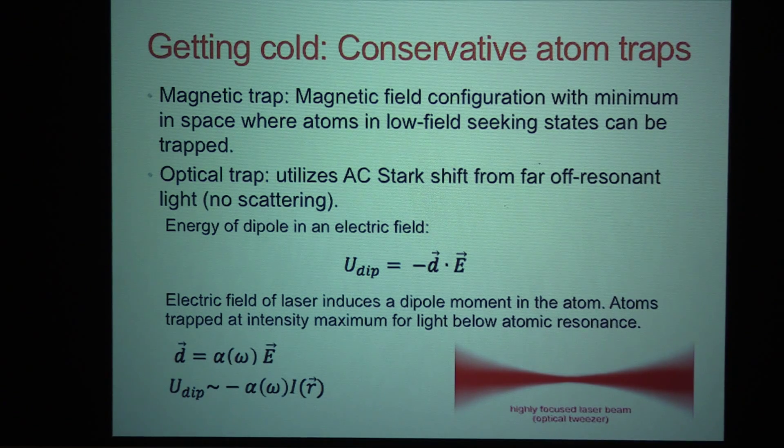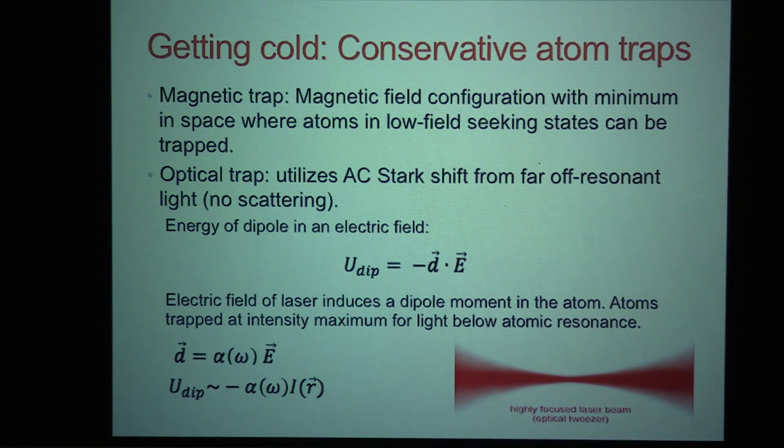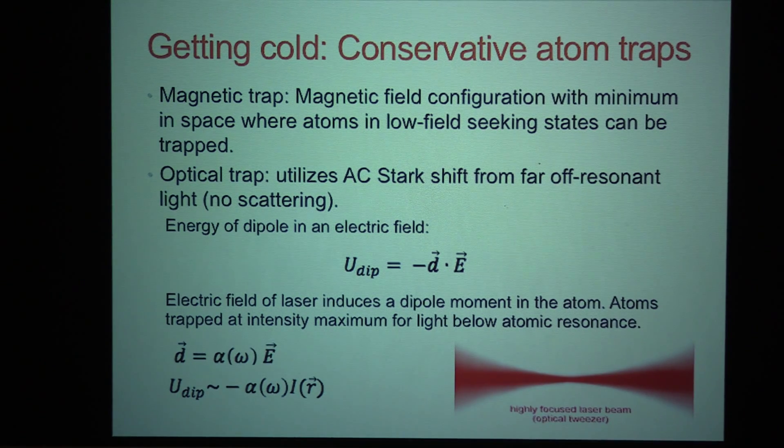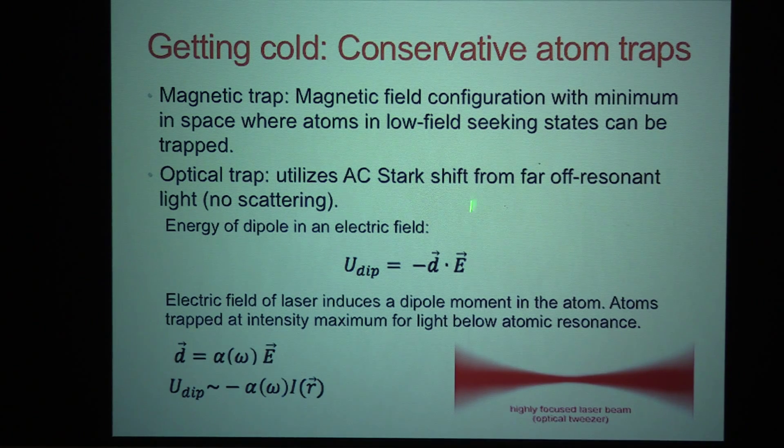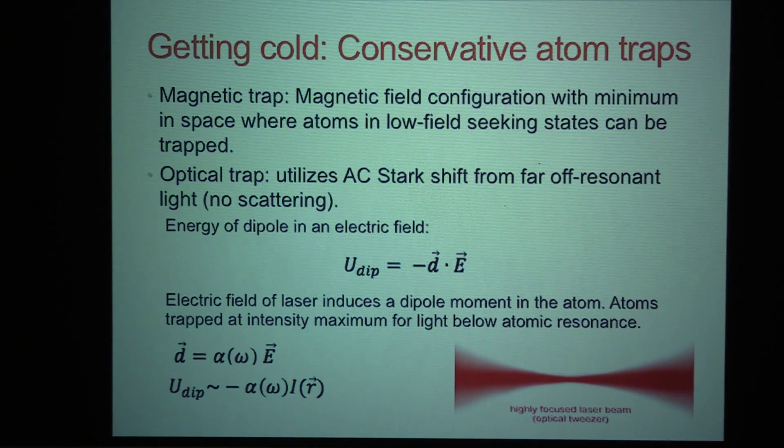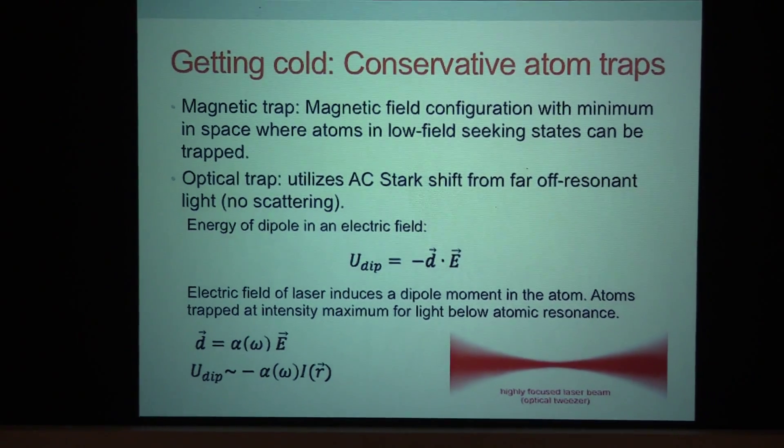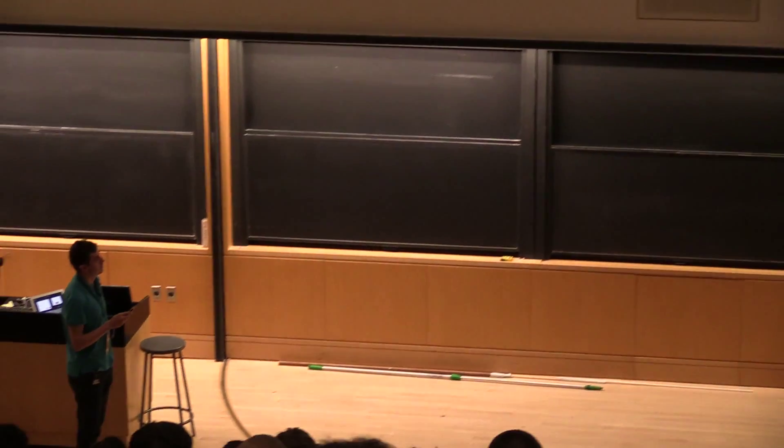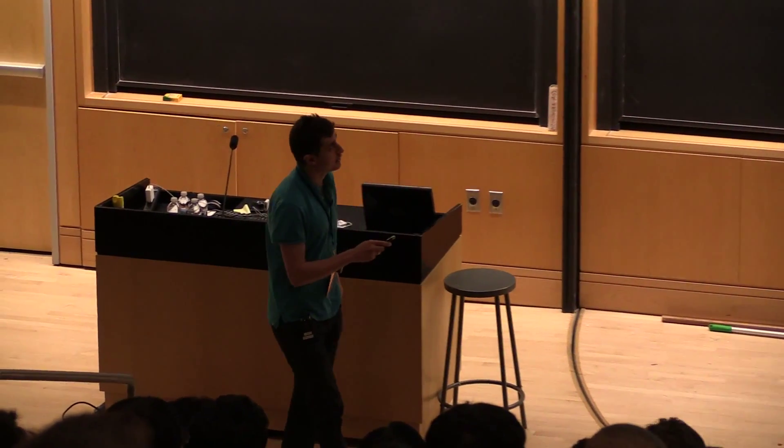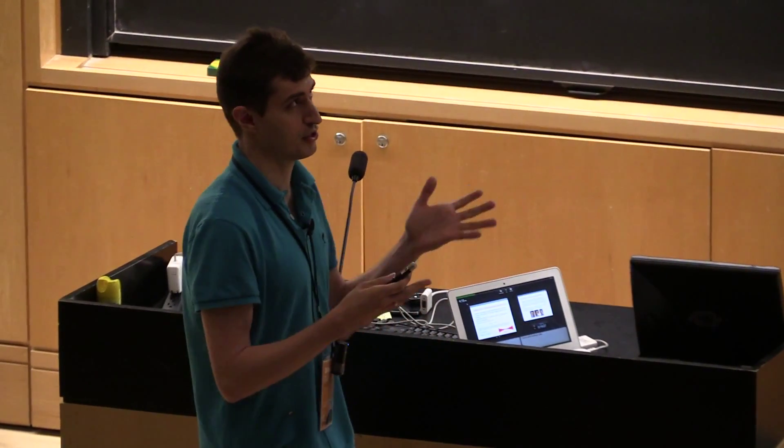One is a magnetic trap. So you can engineer a configuration of magnetic fields which has a minimum in space somewhere. And then because the atoms have a magnetic spin, magnetic moment, they can end up in the, if you put them in the correct state, they can end up in the minimum and get trapped there. Another technique which we use in my lab is an optical trap, which basically acts very much like, in biology, an optical tweezer. You just focus the laser beam down to a tight spot. And you use a wavelength that's very far from the atomic resonance. So there's no scattering of photons. So the light only interacts with the atoms through the AC stark shift. Basically, the electric field of the light induces a dipole moment on the atoms. And that dipole moment interacts again with the electric field to produce a shift of the energy. And the atoms have the lowest energy if they sit, for example, at the focus of this laser beam. So they can get trapped in this conservative optical trap.